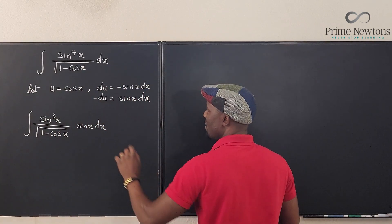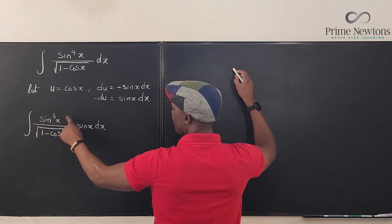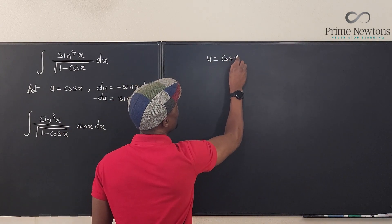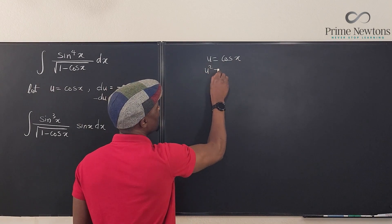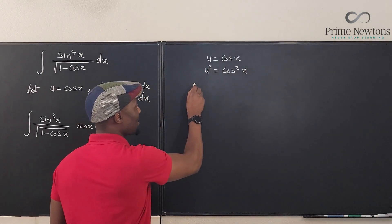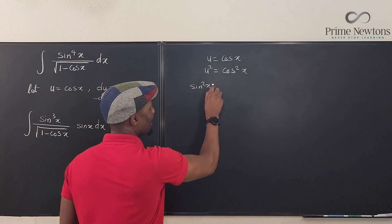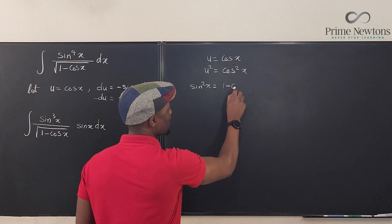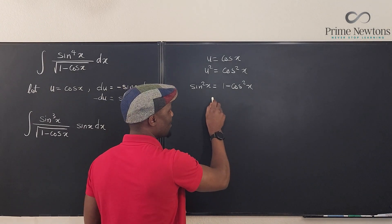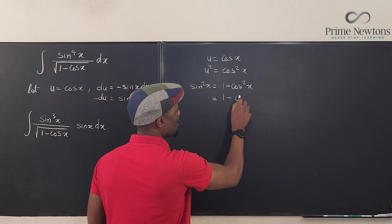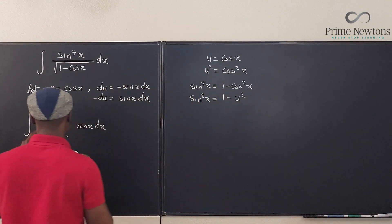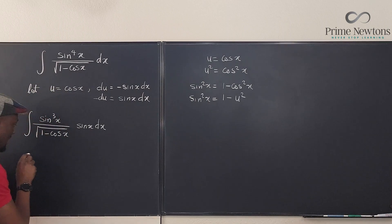I know that if u is cosine x, then u squared is cosine squared x. And I know that sine squared x equals 1 minus cosine squared x — this is a trig identity. So I can replace sine squared x with 1 minus u squared.